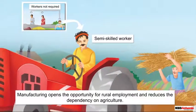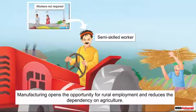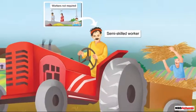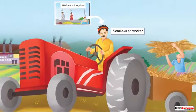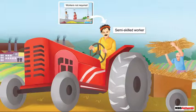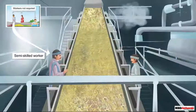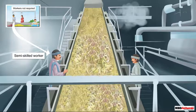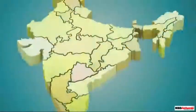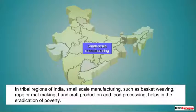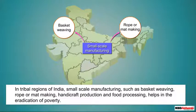In rural India, many people are now engaged in manufacturing industries as semi-skilled workers. This eases the pressure on agricultural activities, and the overcrowded situation in agriculture has been minimized in larger parts of India.